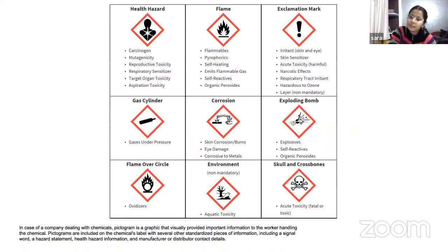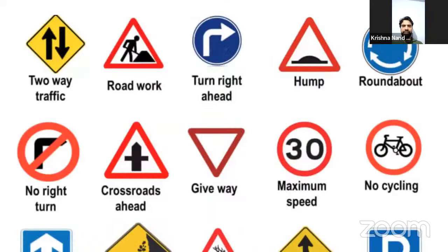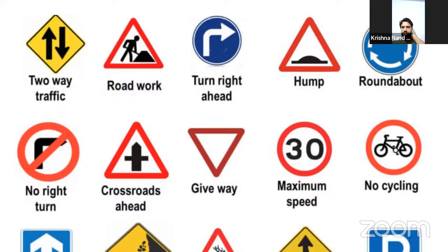The instructor clarifies the assignment: students should choose five road signs they see nearby their homes, not just find them on Google, because practical observation helps them remember better. He encourages students to find creative or unique signage, or even develop their own. The total exercise is ten items: five emotion emoji designs and five signage drawings, to be submitted as a PDF.